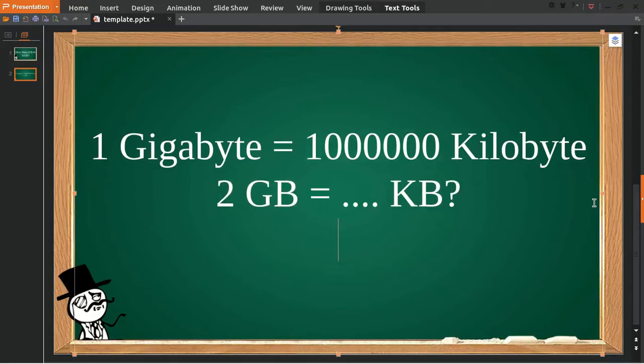The first thing we need to do is multiply two, which you have from here, with one gigabyte and give it an equal sign. Because we have two on the left, we must have two on the right as well, and then we multiply it with this.